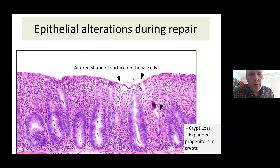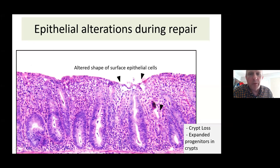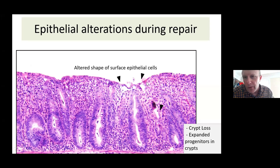What happens in inflammatory bowel disease — as in a number of other injuries — is you have focal areas of very severe injury characterized by loss of these crypts. They're lost in a variety of ways: ischemia, infection, or IBD. There are also more subtle defects. During repair you see expansion of epithelial stem and progenitor cells, and also changes in surface epithelial cells in areas of damage — these flattened wound-associated epithelial cells, which are only a few microns tall compared to the normal 30-micron tall columnar cells.